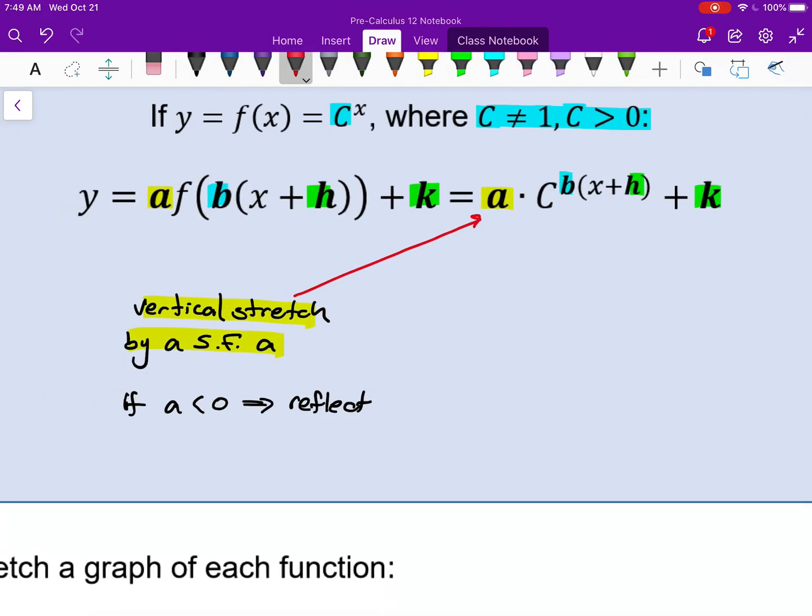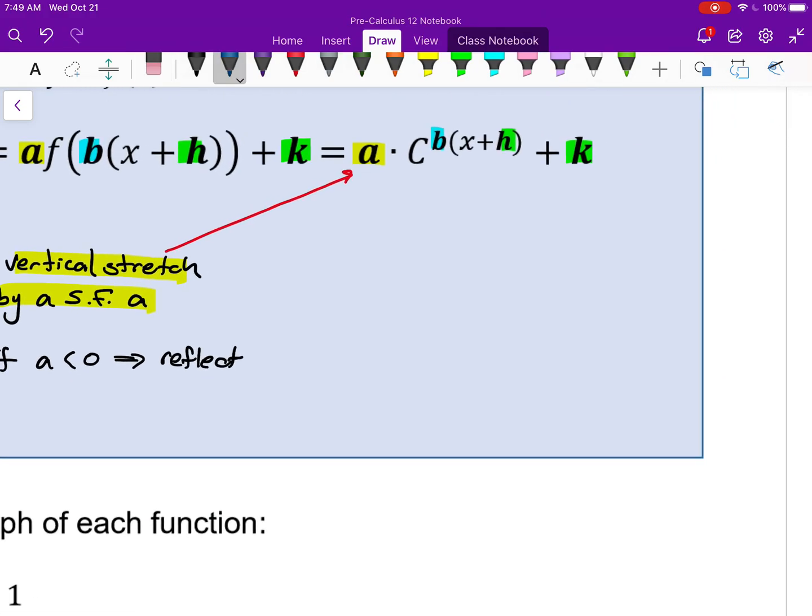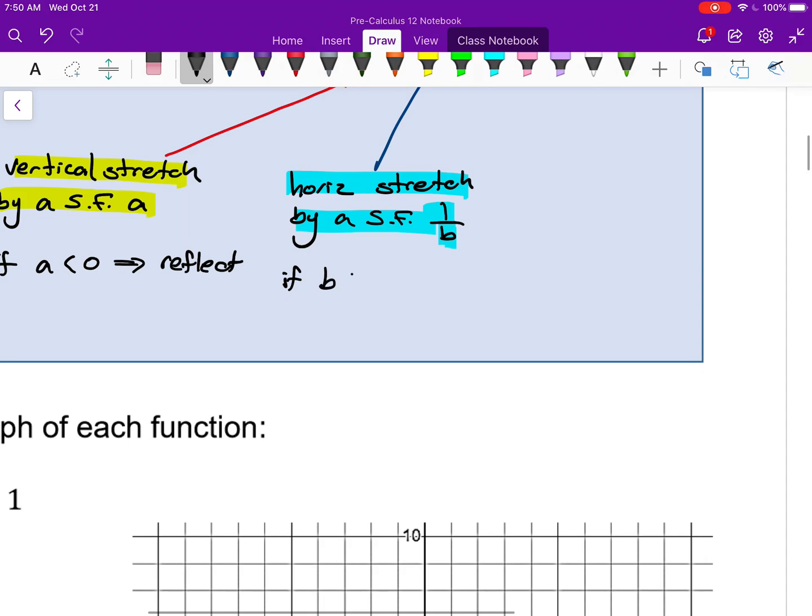And again, we can see that right here as well, but honestly on the left that's just in general in function notation. We've been talking about that since the beginning of the course. So we want to analyze these things from seeing the equation as is on the right. And so the b value, notice it's in the exponent, that is a horizontal stretch by a scale factor of 1 over b, not b. And if b is negative, it's also a horizontal reflection.